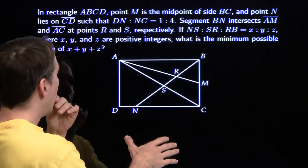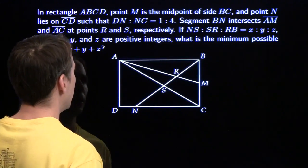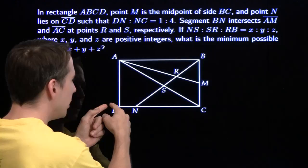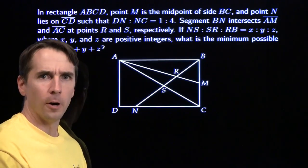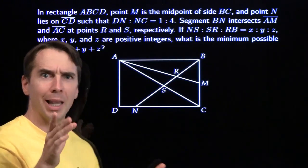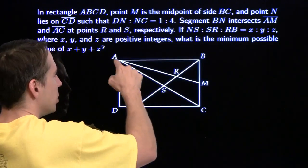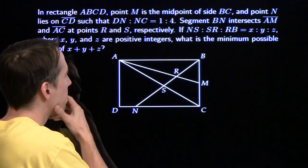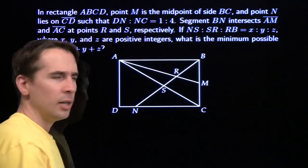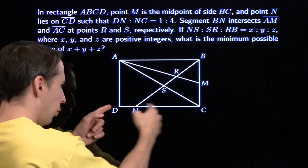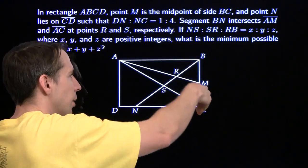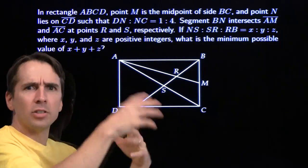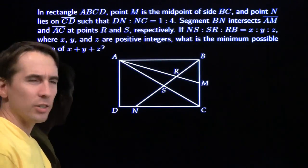We've got a rectangle with a whole bunch of new stuff defined in it. M is the midpoint of one side, and N is on another side such that the ratio is 1 to 4 — just like in the last problem. We draw segment AM and the diagonal, defining some more points. We're looking for the ratio of three pieces along a segment, but we aren't given any lengths at all, so we need to label our diagram with variables.